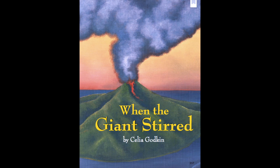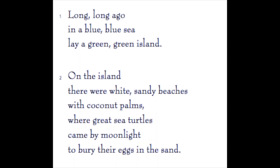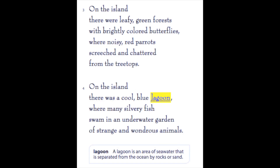Let's turn to page 359 and get ready to read. 'Long, long ago in a blue, blue sea lay a green, green island. On the island, there were white sandy beaches with coconut palms where great sea turtles came by moonlight to bury their eggs in the sand. On the island, there were leafy green forests with brightly colored butterflies where noisy red parrots screeched and chattered from the treetops. On the island, there was a cool blue lagoon where many silvery fish swam in an underwater garden of strange and wondrous animals.'